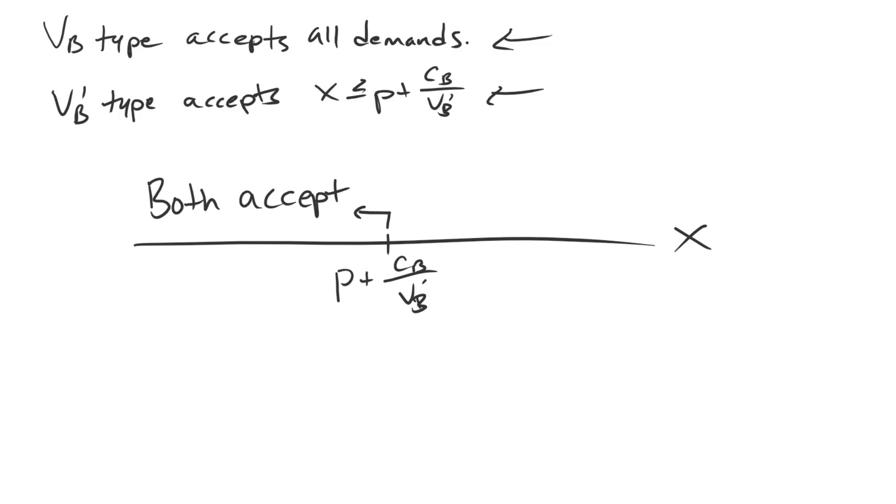If A were to demand anything strictly greater than that, well, again, the VB type is still accepting because it's accepting all demands, but now the VB' type will be rejecting because that is exceeding the threshold. So VB type accepts and VB' type rejects. You'll remember that when we did the same sort of figure for the interior solution, there was a third possibility where A could demand so much that both types reject. Here, that's not possible. Here, if A demands the entire pie for itself, that low valuation type interprets its costs of war as being so large that it is willing to give up the entire good, allow A to take everything just to avoid fighting a war. So as a consequence of that, we only have to sort through two different sets of possible demands, and we can do that very quickly and narrow it down to just two possibilities.